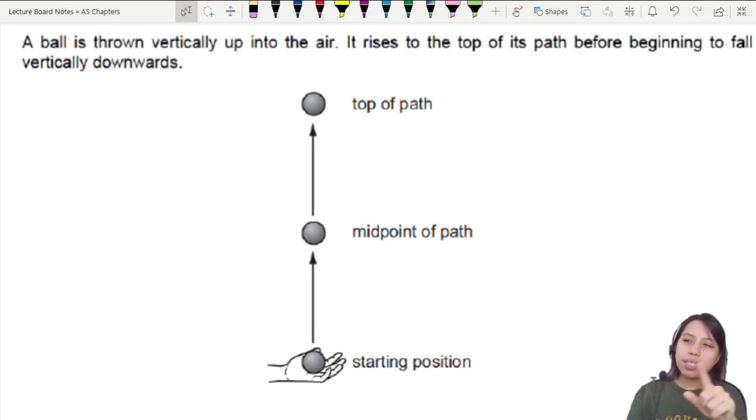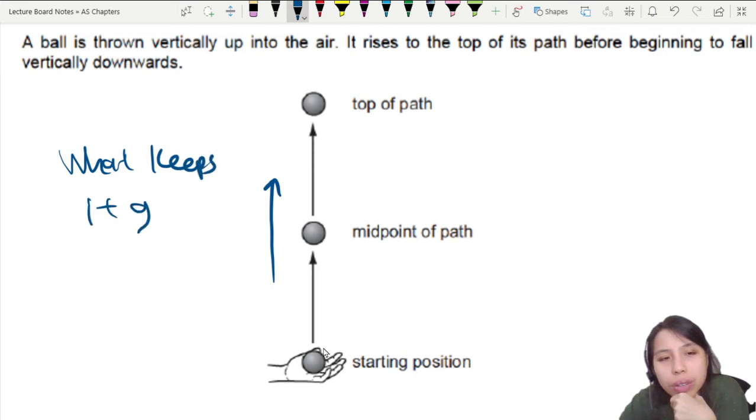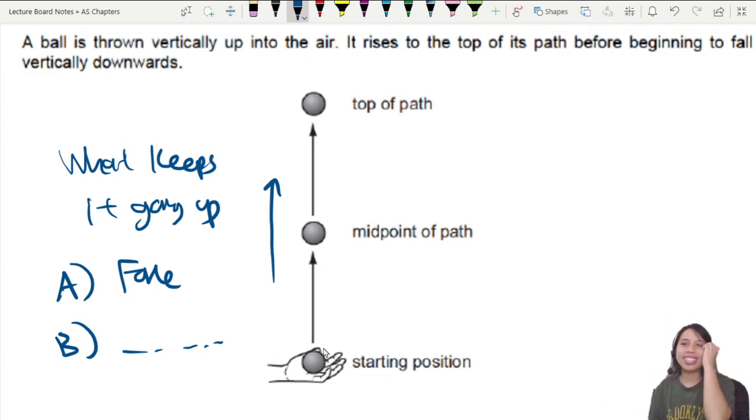Now before we move on, let's pause and exercise our brain a bit. Here is a picture I took from a past year. You have a ball thrown vertically up into the air. We've seen this many times in kinematics. The ball goes up to the top before it comes down. Now let me ask you: at which point is there a force from the hand on the ball? Or I should say, this ball can go up, what keeps it going up? What keeps it going up? Choice A: force on the ball. Choice B: something else.